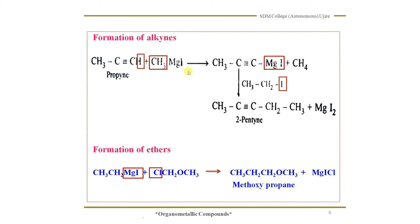To prepare an alkyne, a Grignard reagent is treated with propyne. The reaction takes place like this: CH4 is formed, and the remaining product is CH3-C≡C-MgI. It is further treated with ethyl iodide. When ethyl iodide is treated with this, magnesium MgI combines with I forming MgI2. Magnesium iodide is formed, and we get CH3-C≡C-CH2-CH3.